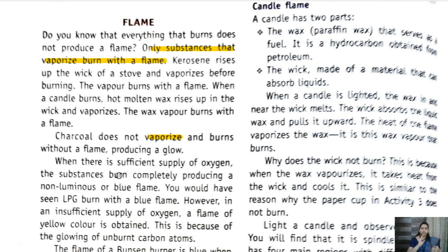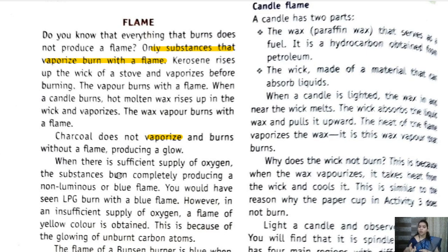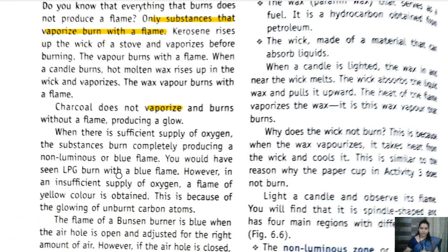You have seen coal burning, candle burning, and a gas stove. In a candle there is a flame; in a gas stove there is a flame. But in the case of charcoal or coal when it is burning, it does not give a flame — it only glows. That is not a flame, whereas a candle and a stove produce a flame.